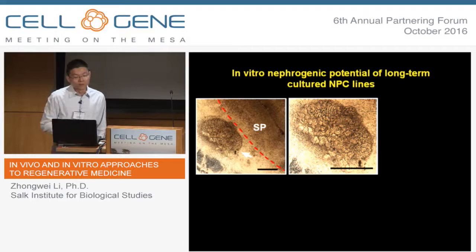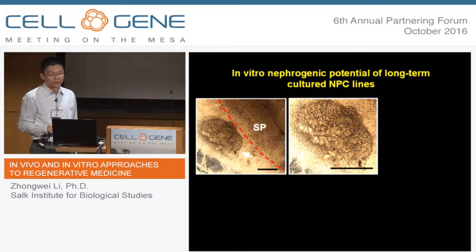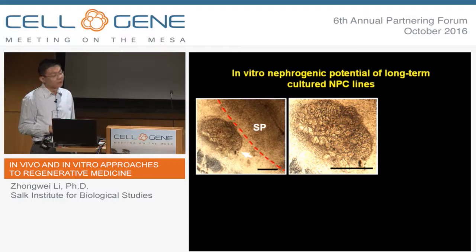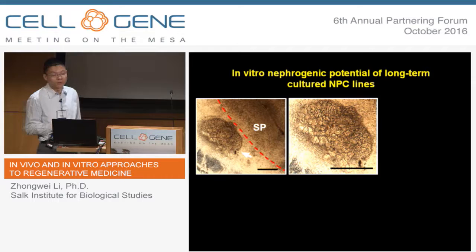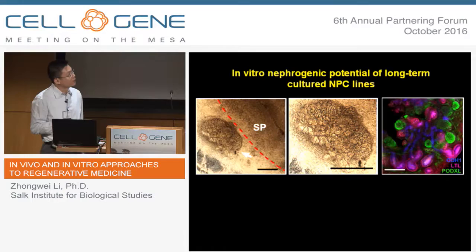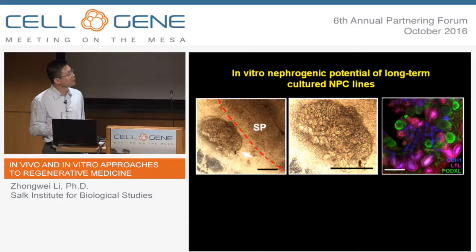The important question is: can the long-term cultured MPC lines differentiate? That is the most important thing. So we used a well-established spinal cord induction assay — we put the aggregates of MPCs next to the spinal cord, and after seven days we observed the formation of numerous tubular structures. When we did the staining, we can see that it has most of the major parts of the nephron, including podocalyxin-labeled glomerulus, LTL-labeled proximal tubules, and CDH1-labeled distal tubules or loop-of-Henle structures.